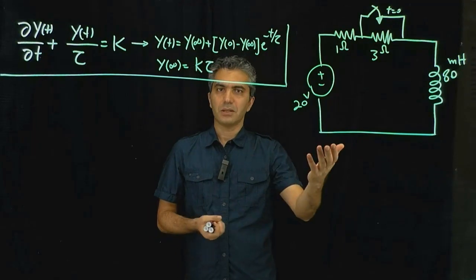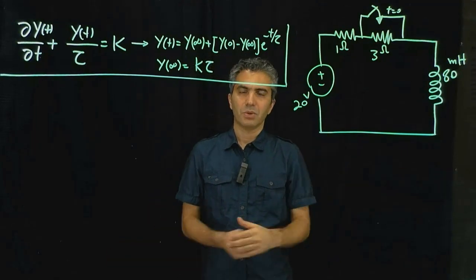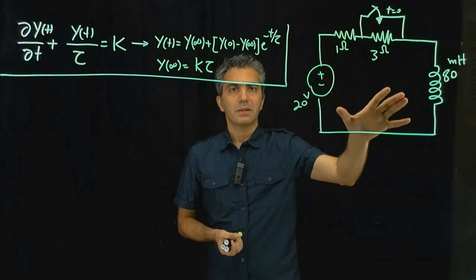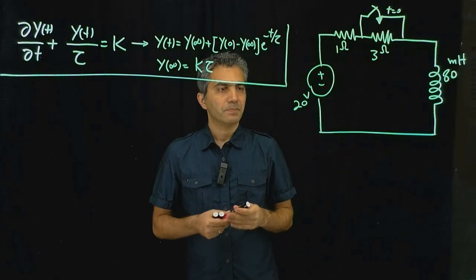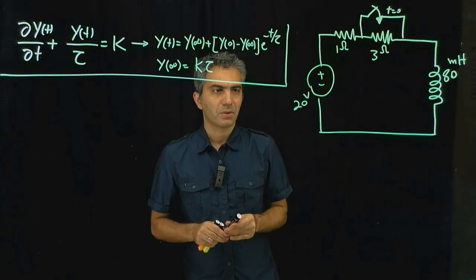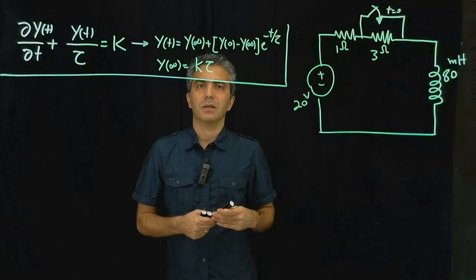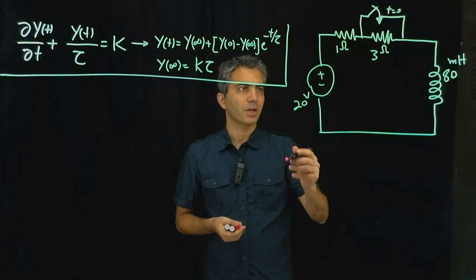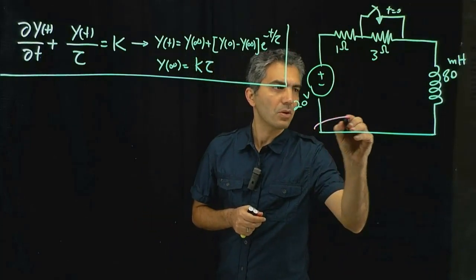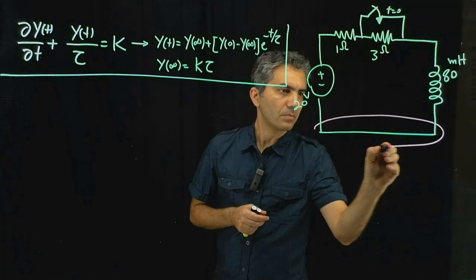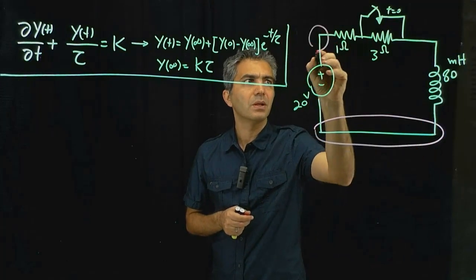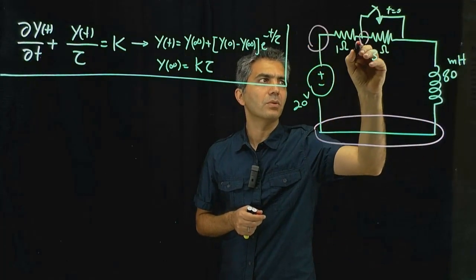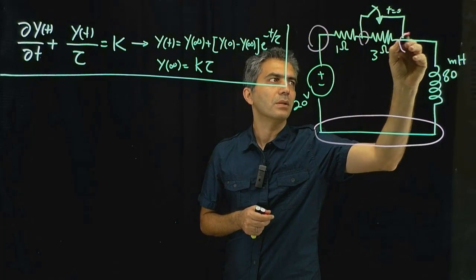You're going to see that it's really similar to what we did for capacitors. So this is the circuit that we're going to analyze. The first step is to label the circuit, as always. We have this node, this node, this node, and this node.